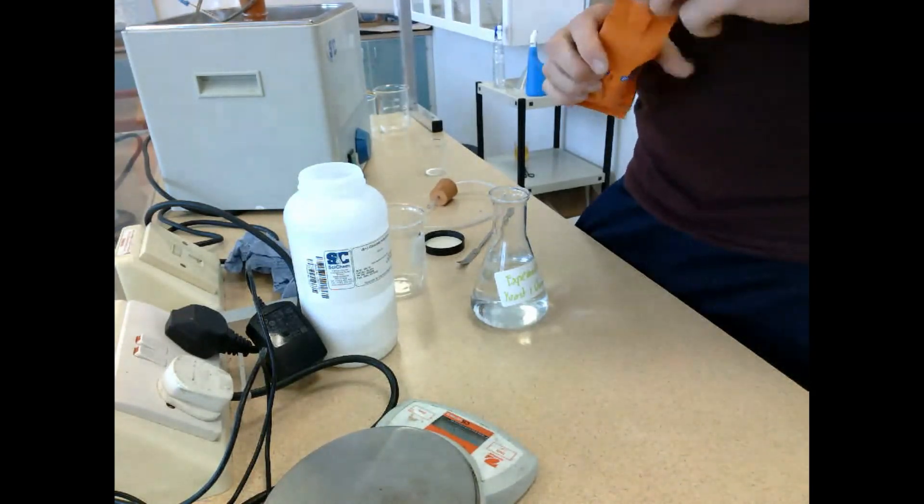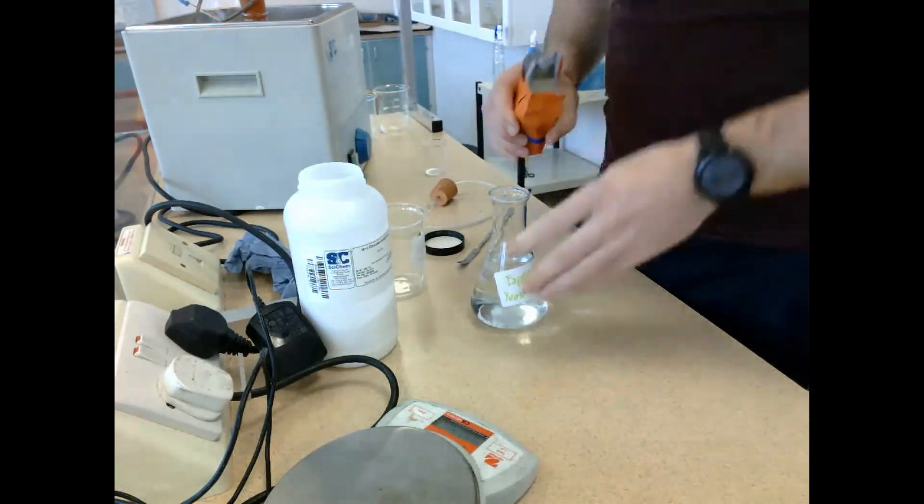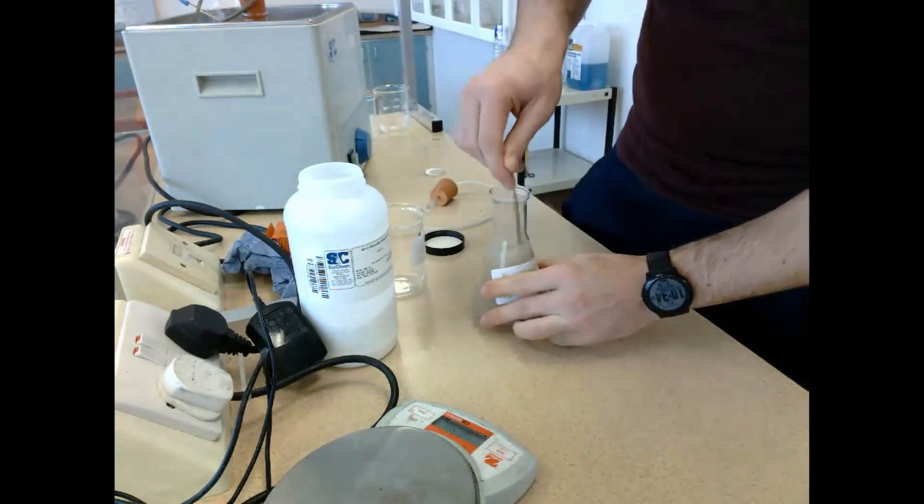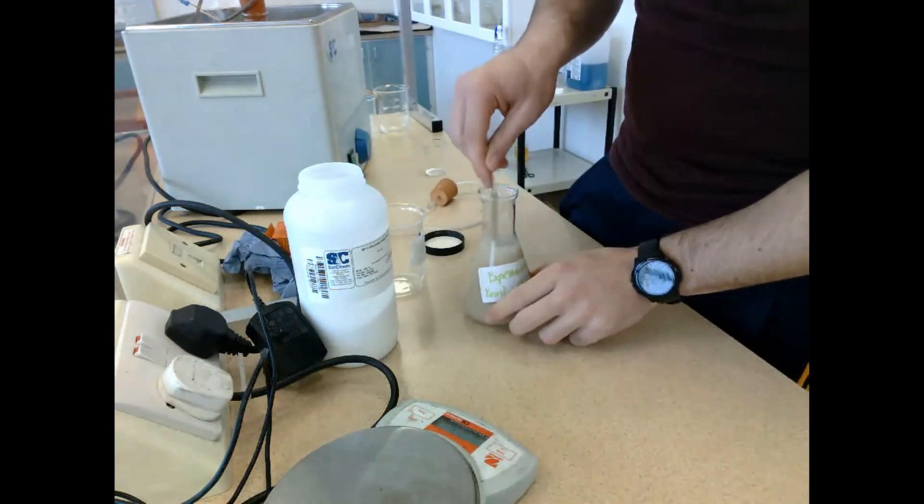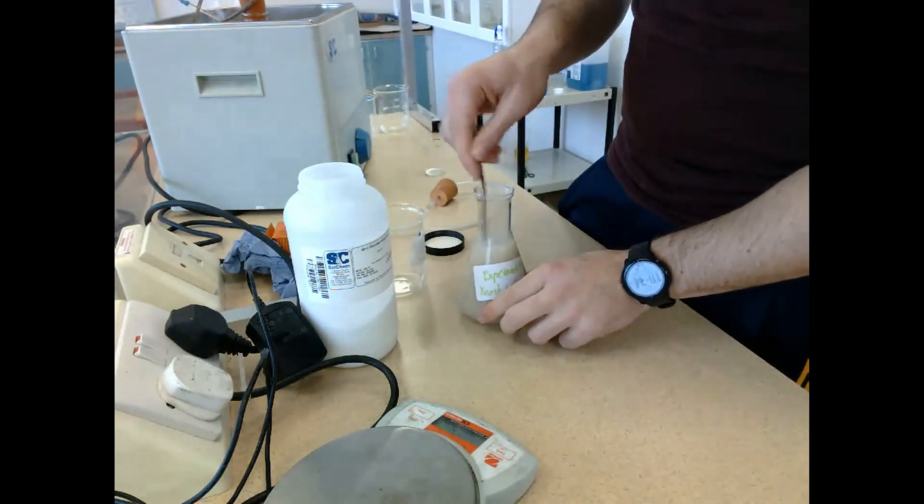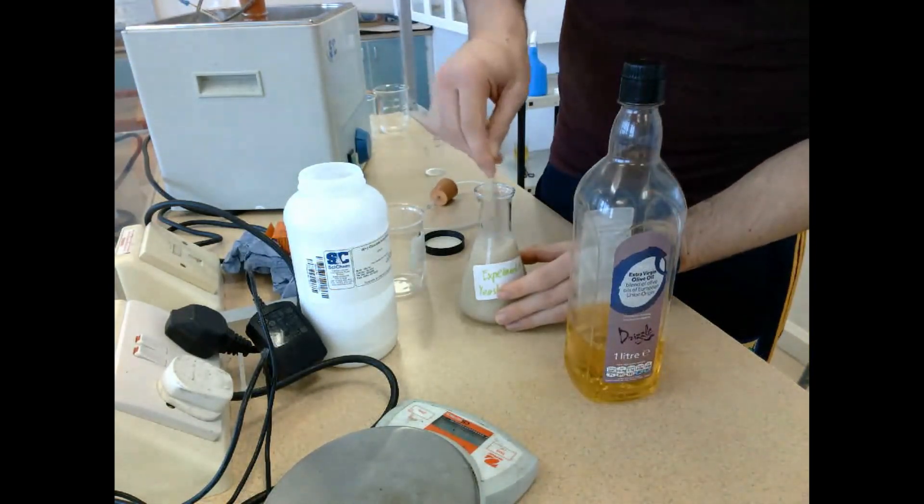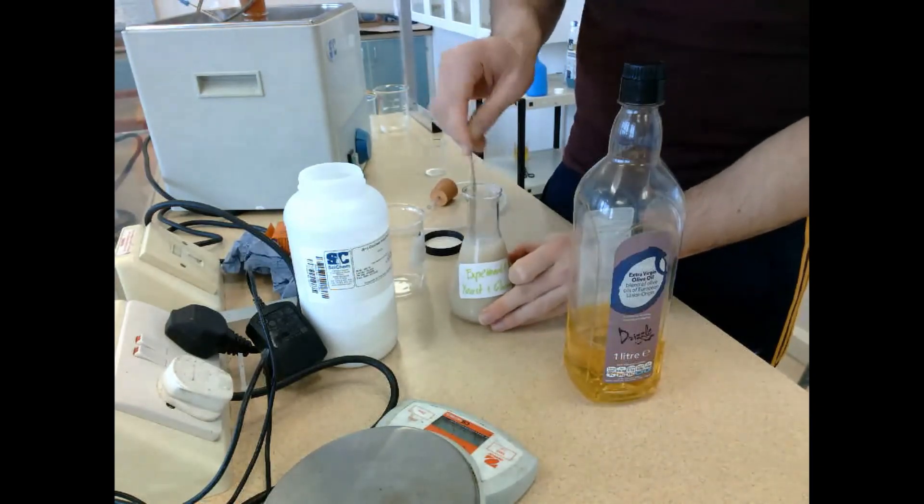Next, we take the second beaker and add it to flask two, but this time we're going to add yeast. We pour the yeast into this flask and then we stir it all together to ensure that the yeast is dissolved in the solution.